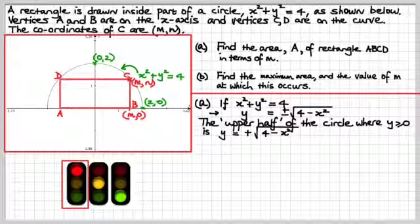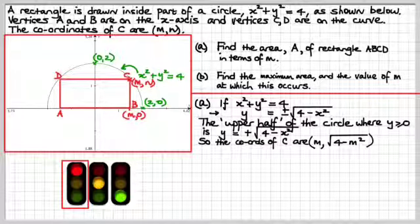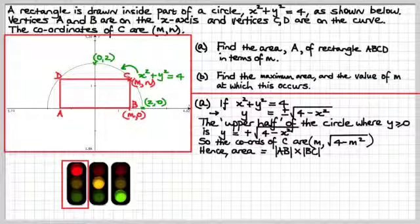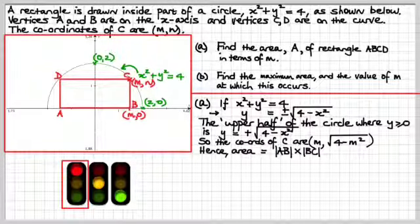Armed with that bit of information, we can now find the area of the rectangle, because the coordinates of C are now m and the square root of 4 minus m squared. Therefore, the area is going to be the magnitude of AB times the magnitude of BC.